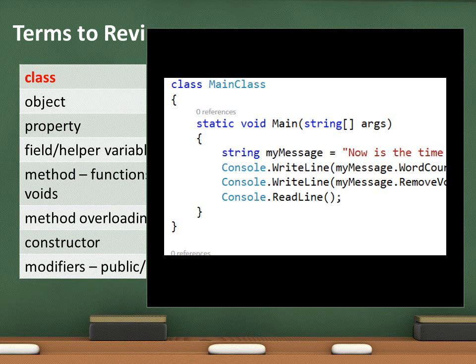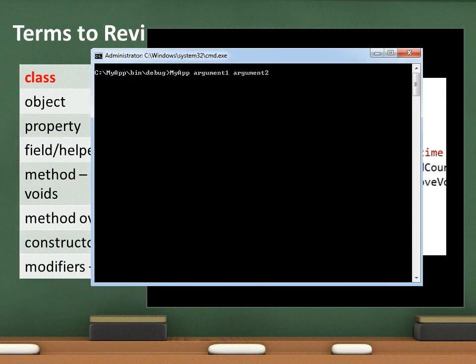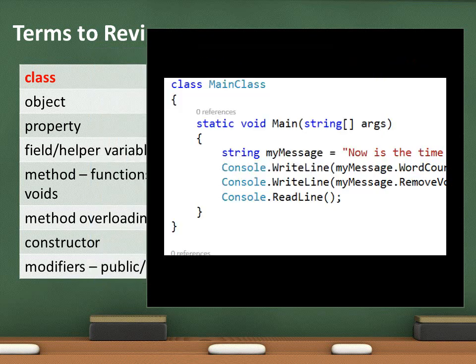A static method is one that does not need to be instantiated to use — watch for a module I'm working on covering static classes and methods. Notice in the console application the string array parameter being passed as a variable called args. This is an optional feature that lets you pass values to main. When you're dealing with a console application, you're typically writing a program you can use at the DOS prompt, so you can put the name of your program in and then pass it values — no parameters or as many as you want.